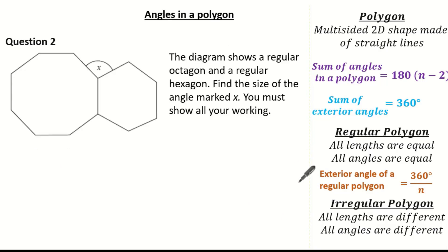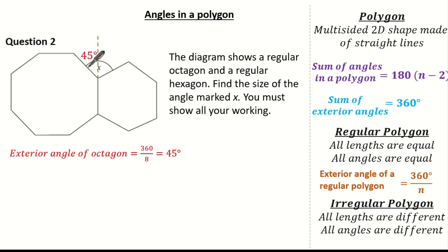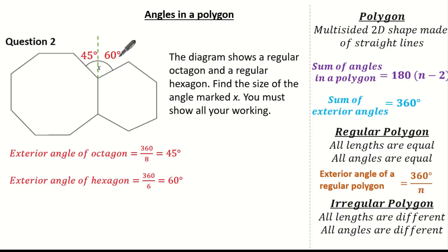Now let's have a look at another question. The diagram shows a regular octagon and a regular hexagon. We are asked to find the size of angle marked X. Extending the length of our polygon, X is made up of the exterior angle of the regular octagon and the exterior angle of the regular hexagon. The exterior angle of the regular octagon is 360 divided by 8, which is 45 degrees. The exterior angle of the regular hexagon is 360 divided by 6, which is 60 degrees. So X is simply 45 plus 60, which is 105 degrees.